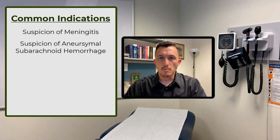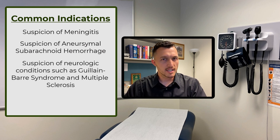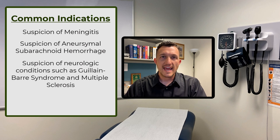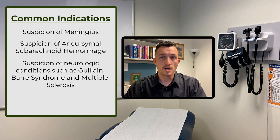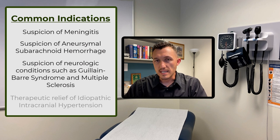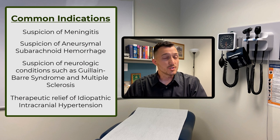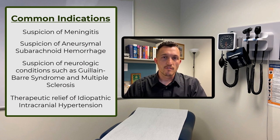Some other common reasons a lumbar puncture may be performed include suspicion of other neurologic conditions, especially demyelinating ones. Multiple sclerosis and Guillain-Barré syndrome are the two most common in that category. Both result in demyelination or death of the myelin sheath and can produce abnormal findings like elevated protein on CSF. Another reason is for the therapeutic relief of idiopathic intracranial hypertension — when someone has elevated intracranial pressure for reasons we don't fully understand, we might perform a lumbar puncture and drain off CSF for therapeutic reasons.